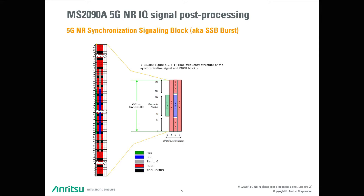In the time domain, the first symbol of an SSB burst is the primary synchronization signal. The second signal is a physical broadcast channel. The third symbol is the secondary synchronization signal, and the fourth symbol is again the physical broadcast channel.